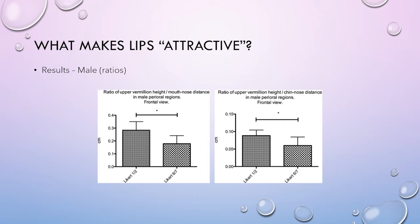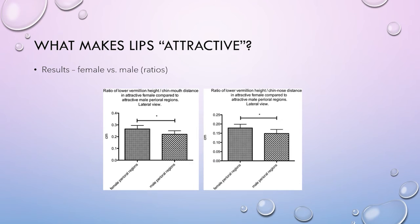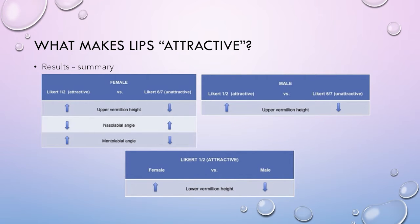In males, the ratio of upper vermilion height and mouth-to-nose distance was greater in the Likert one-or-two group, similar to the results for females. The ratios of measurements in both genders were compared, and results showed that ratios were higher in females for both lower vermilion height and chin-to-mouth distance, and vermilion height and chin-to-nose distance. In summary, greater upper and lower vermilion height makes lips appear more attractive in females, while in males greater upper vermilion height was attractive but lesser lower vermilion height was preferred.